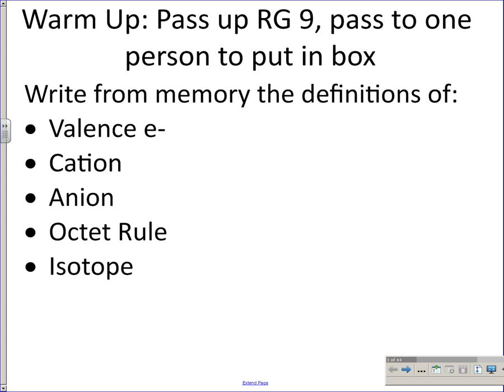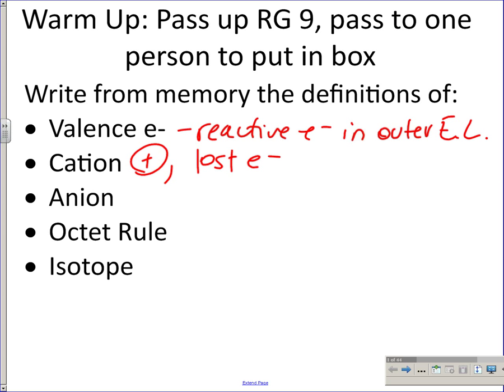Valence electrons are the outer electrons that are going to be reacting — they're reactive electrons in the outer shell or outer energy level. We need to know they're in the outermost energy level. Cations are positively charged — they've lost electrons. Anions are negatively charged — they've gained electrons. Those are terms that we already know.